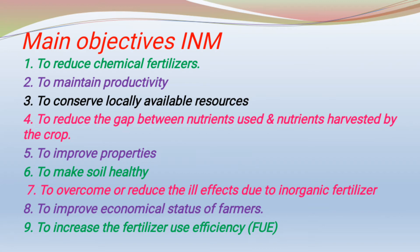Next objective is to make the soil healthy by providing balanced nutrients through different nutrient sources. Also, to overcome or reduce the ill effects of continuous use of only inorganic chemical fertilizer. Integrated nutrient management uses both organic and inorganic fertilizer, but reduces reliance on chemical fertilizer since continuous use of chemical fertilizer affects soil health.